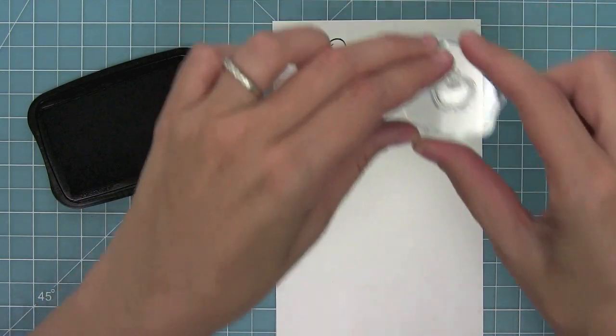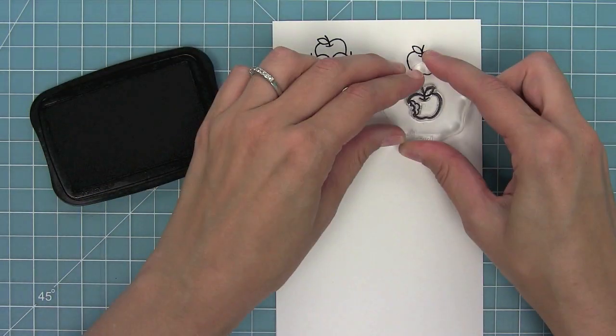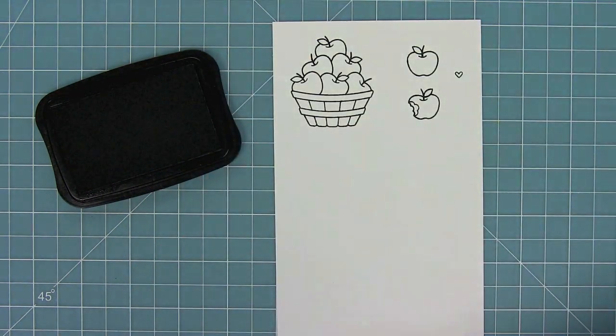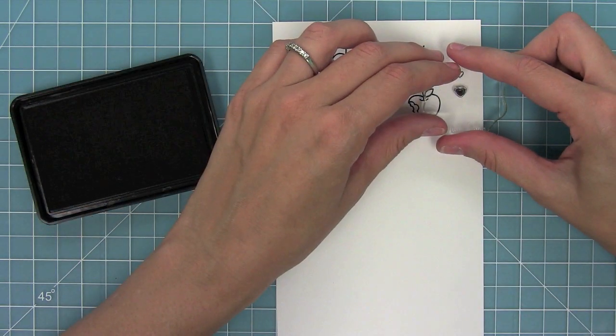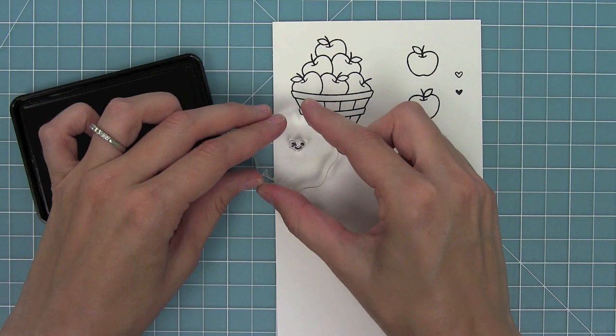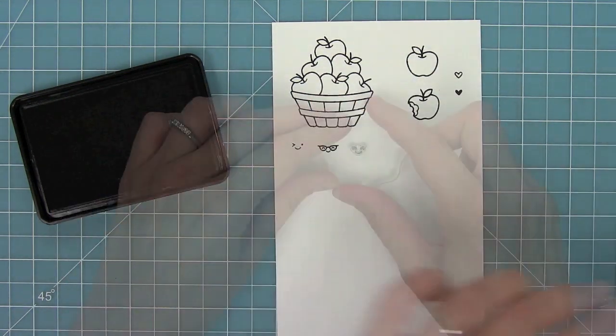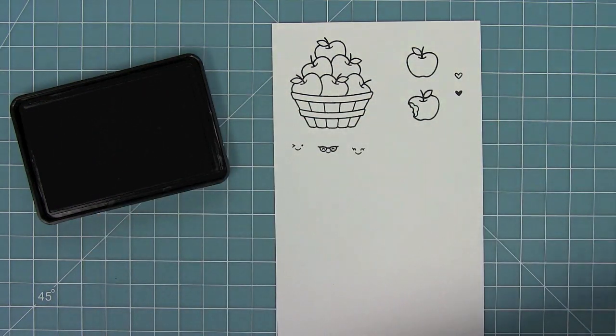Here we have our bushel of apples, a single apple, and an apple with a bite out of it. We also have an open heart and a solid heart, and then we have all of these awesome smiley faces that you can add to the apples or any other stamp sets that you might have.